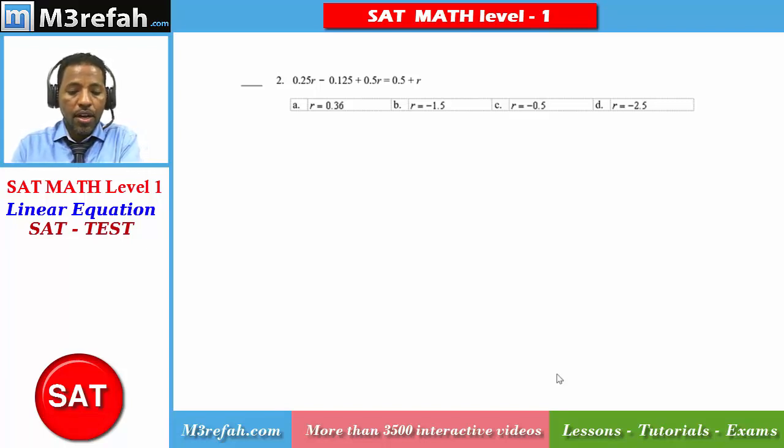You have 0.25r minus 0.125 plus 0.5r equal to 0.5 plus r.